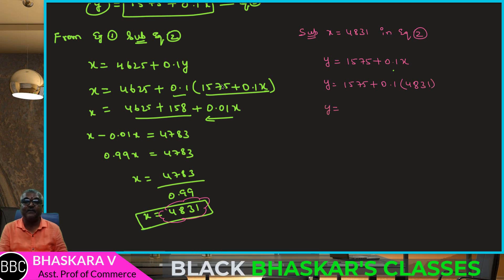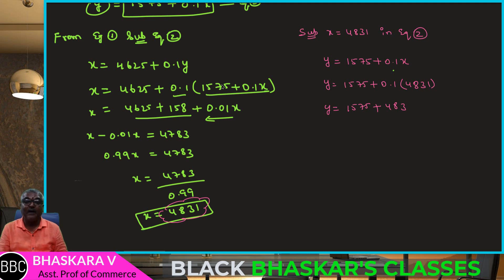Y equals 1,575 plus 0.1 of 4,831 — that is 1,575 plus 483 — therefore Y equals 2,058.